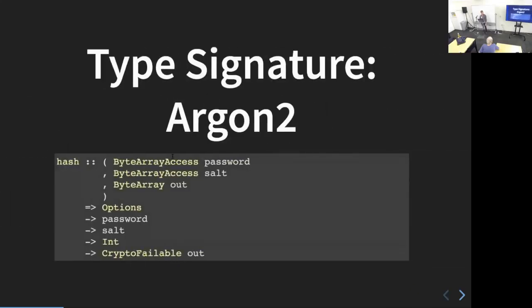Here's our first type signature we're going to use as a lens to investigate Kryptonite. This is for Argon2, which is a password hashing function that won the password hashing competition in 2015. What I want you to look at is just the top part — ByteArrayAccess and ByteArray. The password and salt are instances of ByteArrayAccess, and the hash that the function returns is an instance of ByteArray.